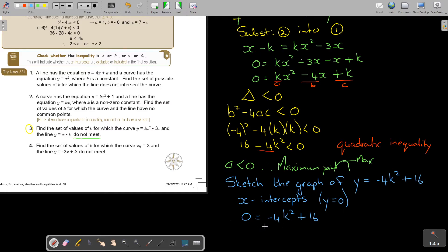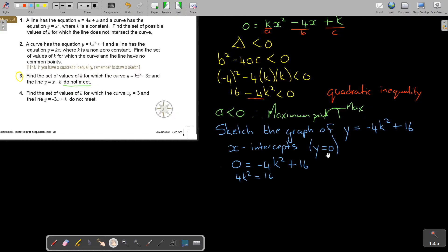I divide by 4. K-square is equal to 4. So, therefore, K, it's the square root, but don't forget, it's plus minus 2. And if I make now a sketch, I'm going to write that 2. There's negative 2. There's 2. Now, don't forget, the sketch looks like this.